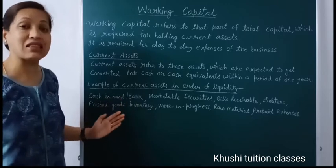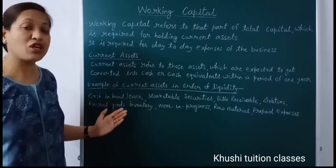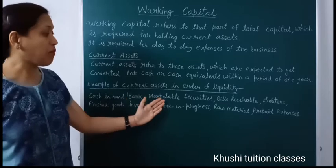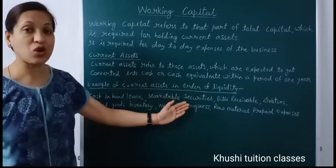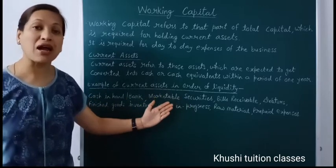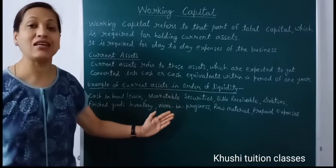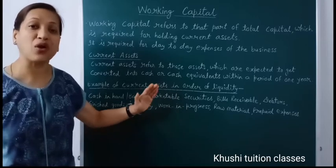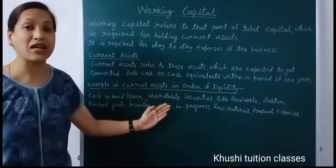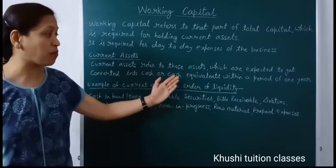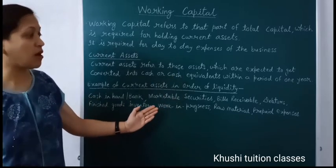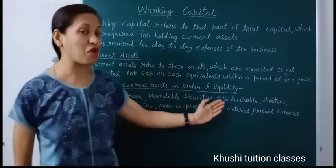The first is cash in hand and cash at bank — this is the most liquid asset because it is already in the form of cash. Then marketable securities — marketable securities can be sold in the market whenever needed and converted into cash. So after cash, marketable securities are the second most liquid asset.